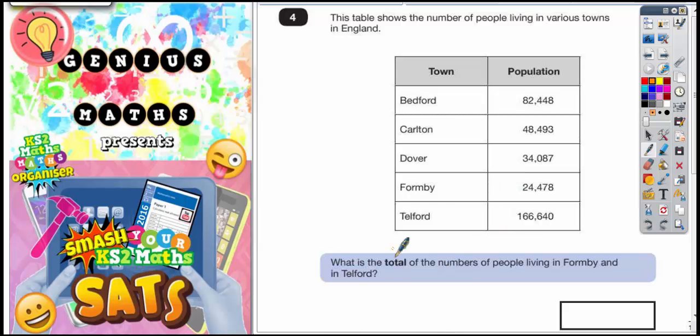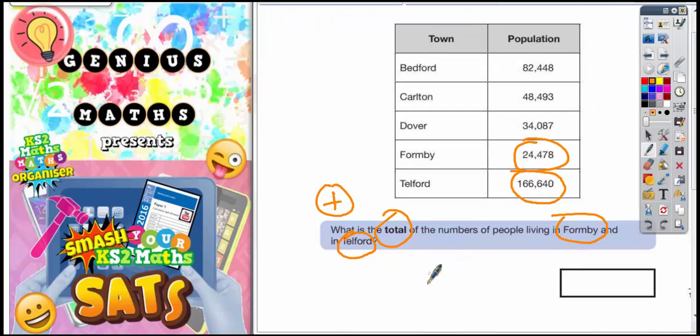What is the total of the numbers of people living in Formby and Talford? Well, total means you've got to add them together. So we need Formby's, which is 24,478, and Talford's, which is 166,640. We can work that out by doing a little column method. So it's going to be 166,640 add 24,478.